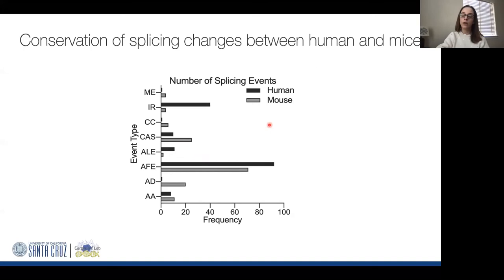We're very interested in determining if this particular event in mouse macrophages is conserved across species. We performed the same experiments on primary human macrophages activated with LPS and compared them to mouse. Again, we see that alternative first exon usage is the dominant event in both human and mouse following inflammatory activation.